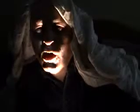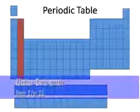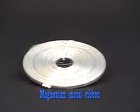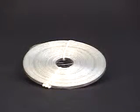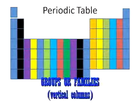Right next to them in group two are the alkaline earth metals. They're also very reactive, though not as reactive as the alkali metals. They exist only in compounds and are rarely found on their own.